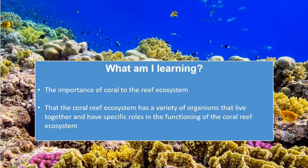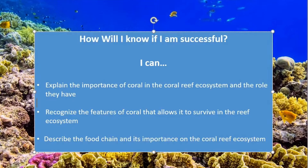So let's have a look at what am I learning today. Today I am learning the importance of coral to the reef ecosystem. I am also learning that the coral reef ecosystem has a variety of organisms that live together and have specific roles in the functioning of the coral reef ecosystem. I can explain the importance of coral in the coral reef ecosystem and the role they have. I can recognise the features of coral that allows it to survive in the reef ecosystem, and I can describe the food chain and its importance on the coral reef ecosystem.